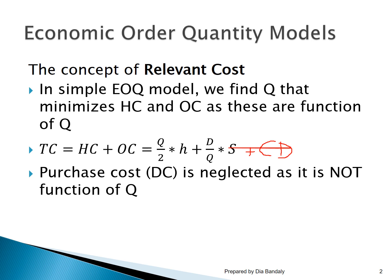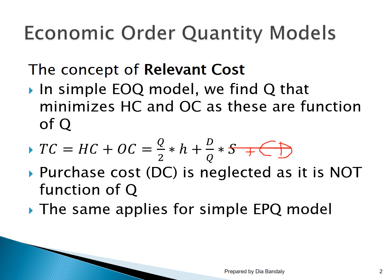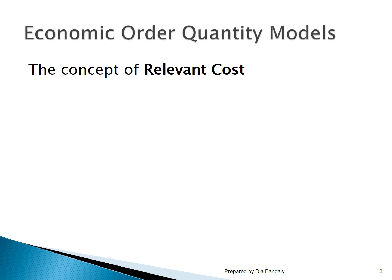This explains why we exclude the purchase cost, and it's exactly the same concept why we excluded the purchase cost in the EPQ model — because it's not a function of the quantity we are making. You may wonder: if the purchase cost does not affect our EOQ or EPQ, why did we include the purchase cost in the make-or-buy problem we solved in the previous session?